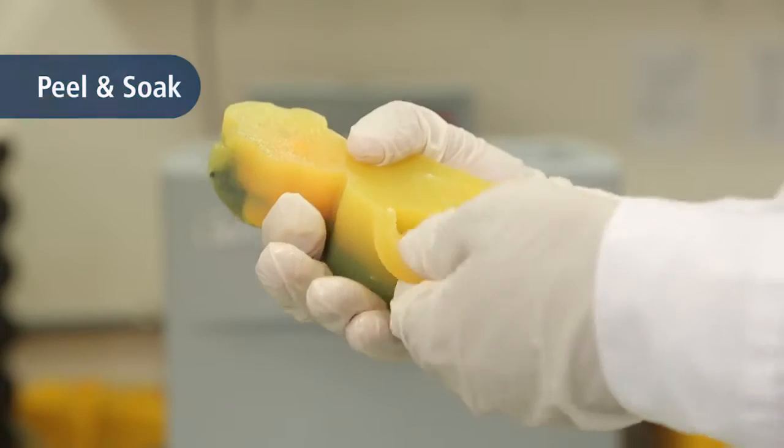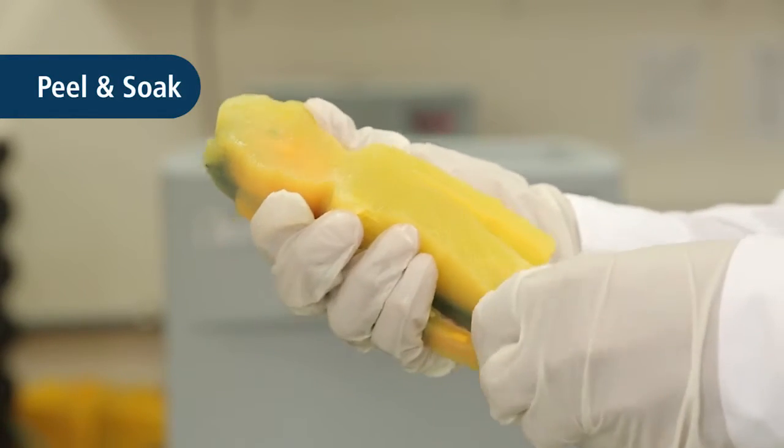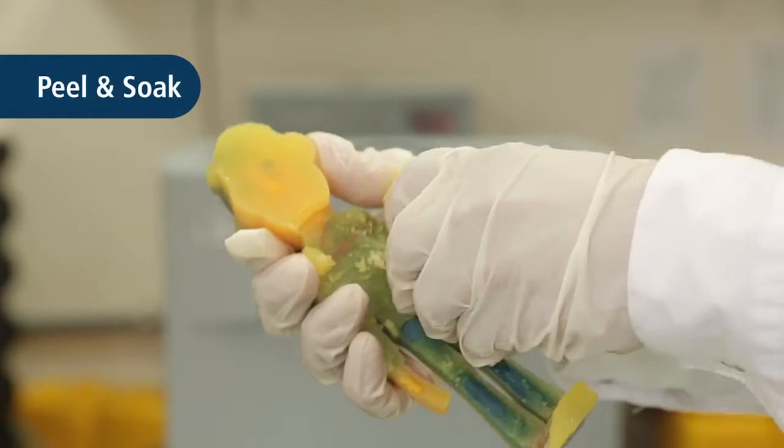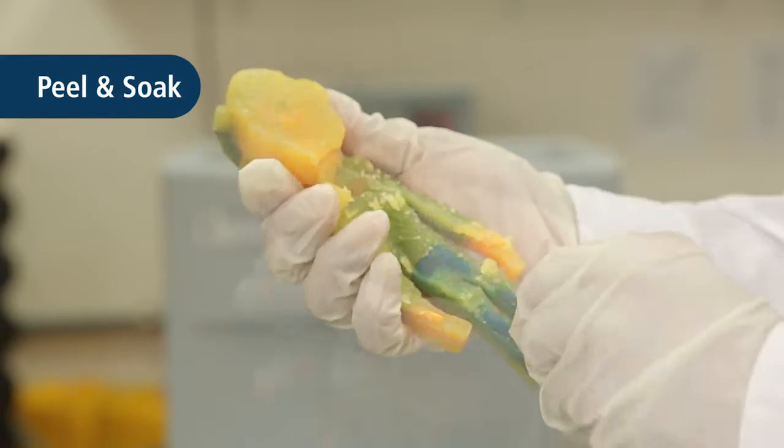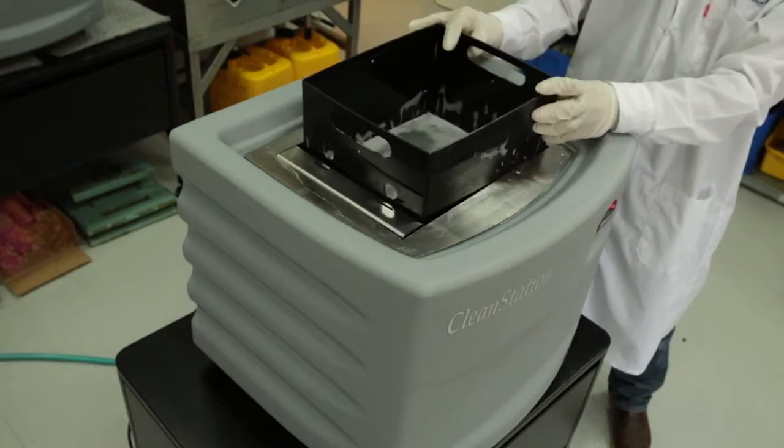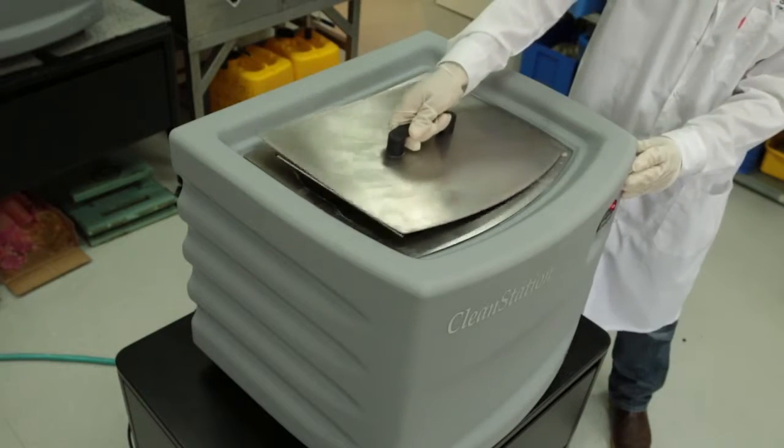The peel and soak method is especially effective for parts with thick layers of support material. First, remove the support material manually. Then place the partially cleaned part in the cleaning solution to remove the remainder of the material.